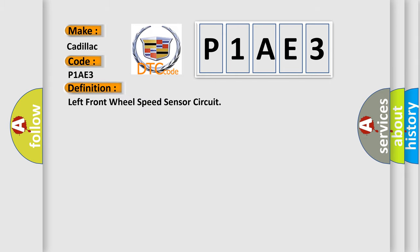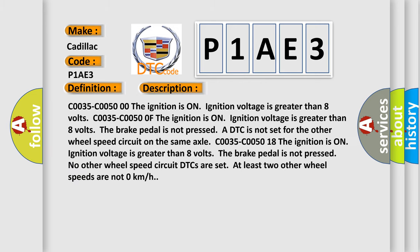The basic definition is: Left front wheel speed sensor circuit. And now this is a short description of this DTC code.